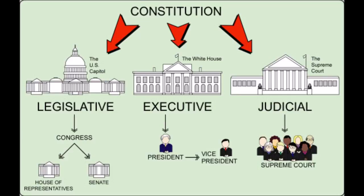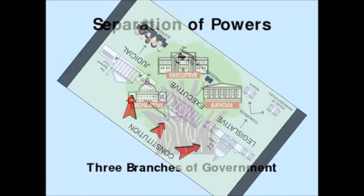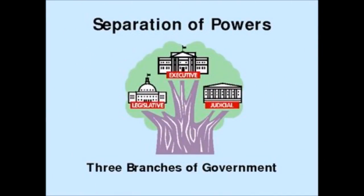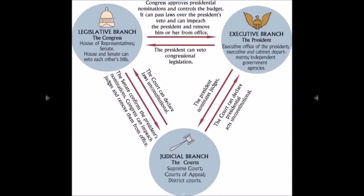You probably recognize each of these branches as the United States Congress, the United States Presidency, and the United States Supreme Court, respectively. These three branches of the federal government are constructed as such so as to provide for a separation of powers, which in England had been originally concentrated in the monarch, and then later distributed between the English monarch and the British parliament only. Uniquely, the American system of government decentralized political power even more so, as intended by the framers.